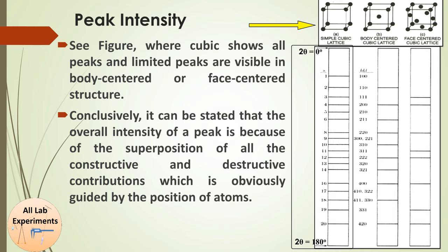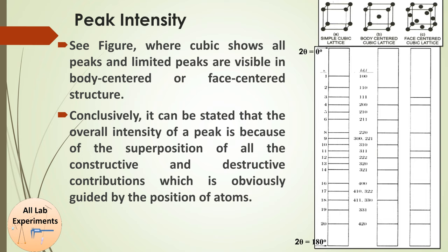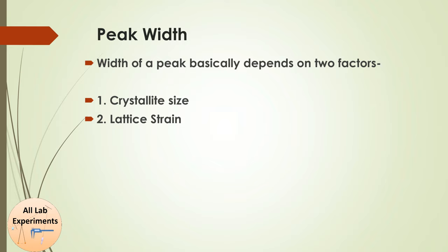This is a general example showing that peak intensity depends upon the position of atoms. To summarize: the overall intensity of a peak is due to the superimposition of all constructive and destructive contributions, which is guided by the position of atoms. Now we want to discuss about the width of an XRD peak. The width of a peak depends on two factors: crystallite size and lattice strain.